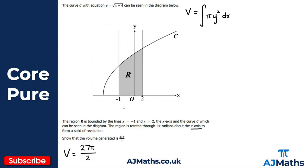We also need the limits for this integral. From our diagram, the lower limit is clearly minus one and the upper limit is two. Now we need y². Since y equals √(x + 4), y squared is just x + 4.